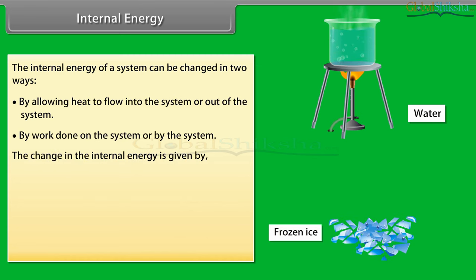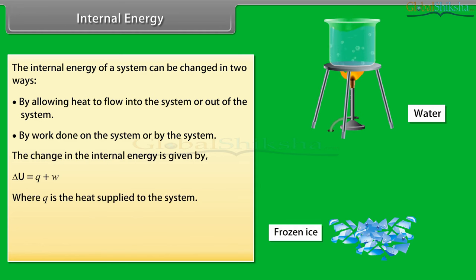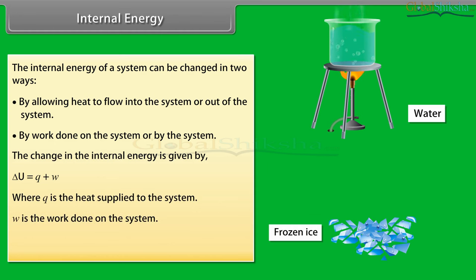The change in internal energy is given by ΔU = Q + W, where Q is the heat supplied to the system and W is the work done on the system. This relation is the first law of thermodynamics.